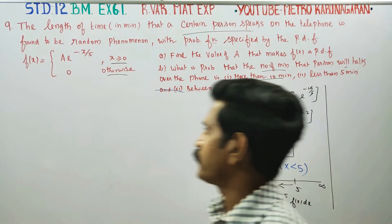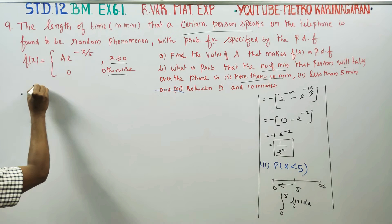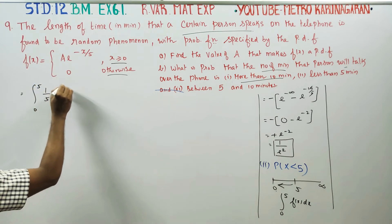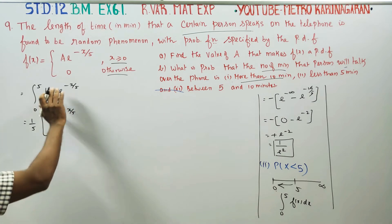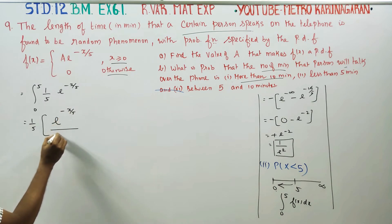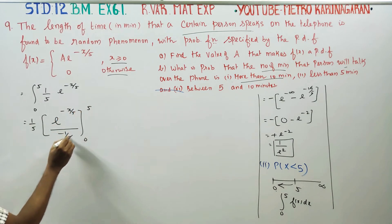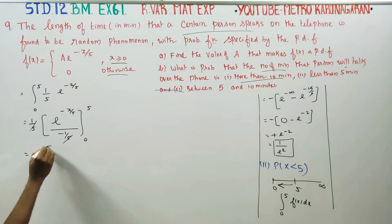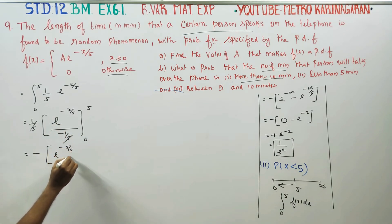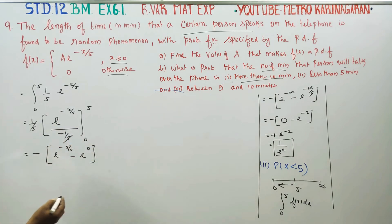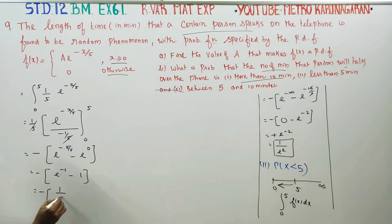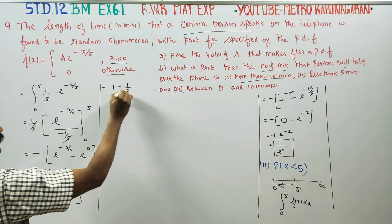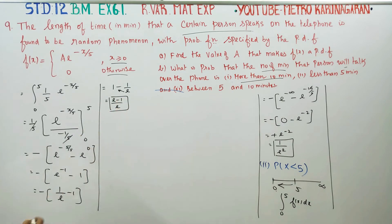We integrate from 0 to 5: the integral of 1/5 times e to the power of minus x by 5 dx. Evaluating: 1/5 times the result from upper limit 5 to lower limit 0 gives e to the power of minus 5 by 5 minus e to the power of 0. This simplifies to minus e to the power of minus 1 minus 1, which equals 1 minus 1 by e. Taking LCM gives the answer as (e minus 1) by e.